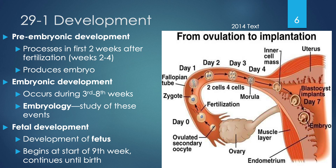Pre-embryonic development is defined as the development that occurs before we actually have an embryo. An embryo exists between the third and eighth weeks of life. Before that, we have two gametes — the male sperm and the female secondary oocyte — that meet, fertilize, and proceed through a process to become an embryo. The pre-embryonic period covers the processes that occur in the first two weeks after fertilization and produce the embryo.